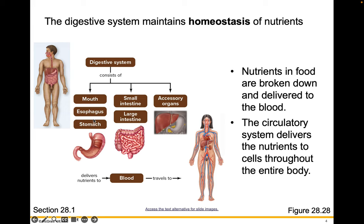The digestive system consists of your mouth, esophagus, and stomach, small intestine, and large intestine, and accessory organs. The digestive system delivers nutrients to your blood, which travels to your whole body.